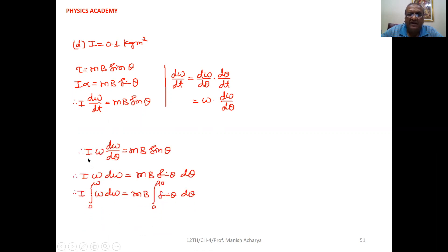So now in this equation, replace dω/dt by ω × dω/dθ. So we can write I × ω × dω/dθ = MB sin θ.